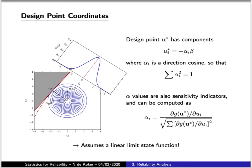The point of closest approach on the limit state line is generally referred to as the design point. Given that the vector to the design point has length beta, the components of that vector can be written as the product of its direction cosines and its magnitude — those direction cosines are denoted alpha. These alpha values also give an indication of the sensitivity of the reliability to each variable: if the limit state function were oriented a certain way, the reliability index would be sensitive to changes in the parameters of R but not at all to changes in the parameters of E.